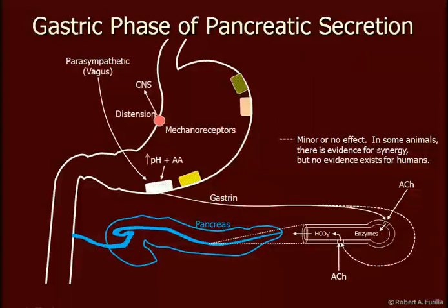The gastric phase also occurs through gastrin secretion and ACh, and is very similar to the cephalic phase. However, the increase in gastrin in the gastric phase drives enzyme secretion to an even higher level. We begin to see a lot of enzymes being secreted, such as trypsinogen — the precursor to trypsin, which is a protease assisting in the breakdown of polypeptides first produced by the action of pepsin in the stomach.